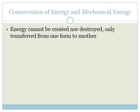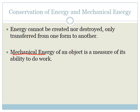Now let's talk about the theme of this lesson, which is the conservation of energy and mechanical energy. The definition of energy is that energy cannot be created nor destroyed, only transferred from one form to another. So the energy that was spread out when the atoms were made during the Big Bang is the same energy that is going around today. Mechanical energy of an object is a measure of its ability to do work.